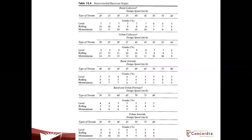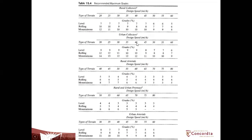There are also recommended maximum grades depending on the type of terrain, the speed, and the type of road. For instance, if you are looking at a rural collector with a design speed of 40 miles per hour on flat terrain, we don't want to go beyond seven percent grade. For an urban collector at 40 mph on rolling terrain, you can go up to 10 percent.